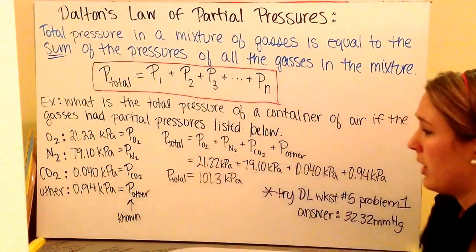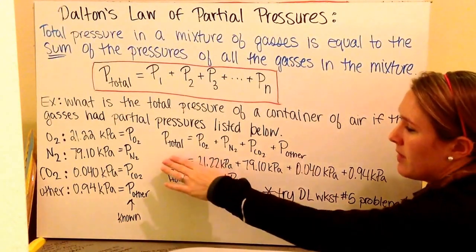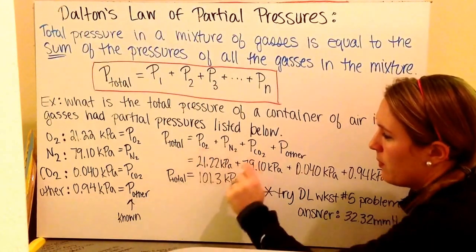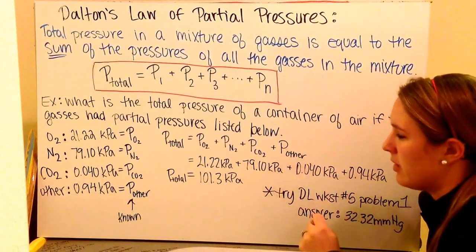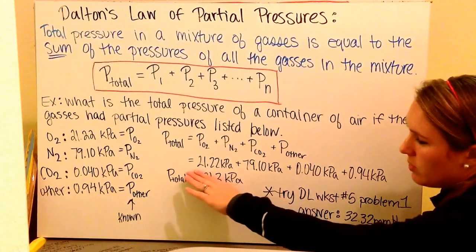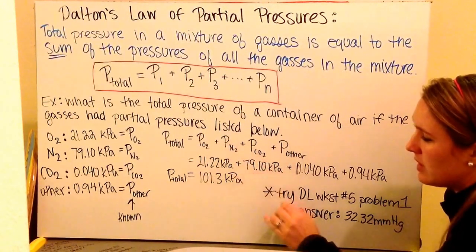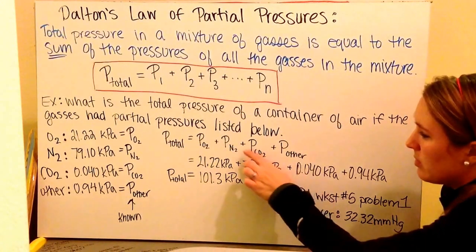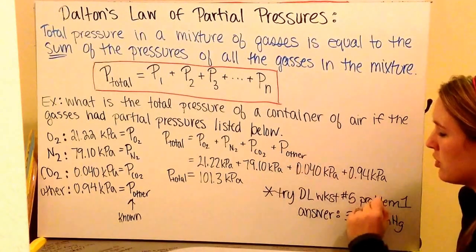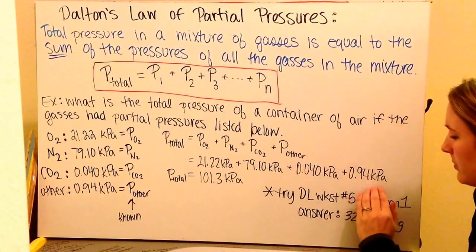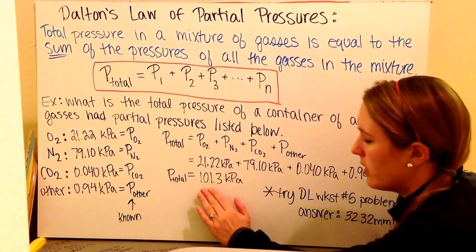I'm looking for my total pressure, and I do that by determining and adding up the sum of my partial pressures. So I write up my equation. My P total is equal to my pressure of oxygen, partial pressure of nitrogen, partial pressure of carbon dioxide, plus the partial pressures of my other. I plug in my numbers of 21.22 kilopascals, my partial pressure of oxygen, plus my partial pressure of nitrogen, 79.10 kilopascals, plus my partial pressure of carbon dioxide, 0.040 kilopascals, plus my partial pressure of my others, 0.94 kilopascals. When I add them together, I get a total pressure of 101.3 kilopascals.